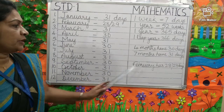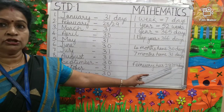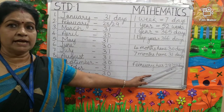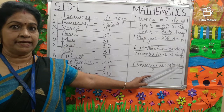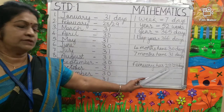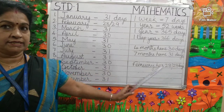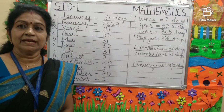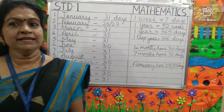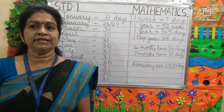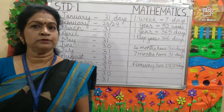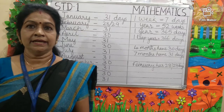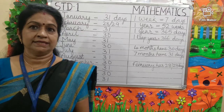February has 28 or 29 days. If it is a leap year, it will have 29 days; otherwise it will have only 28 days. Worksheets related to these will be uploaded on your school website. Kindly go through them and practice. Thank you.